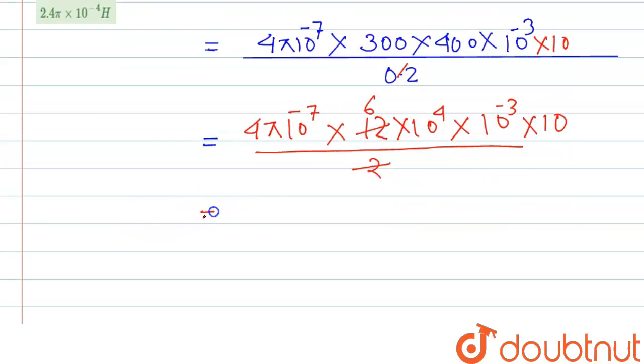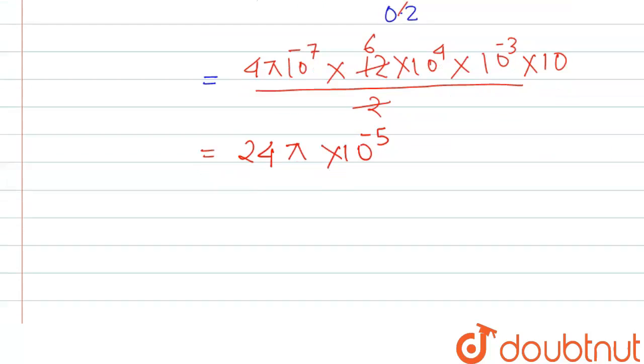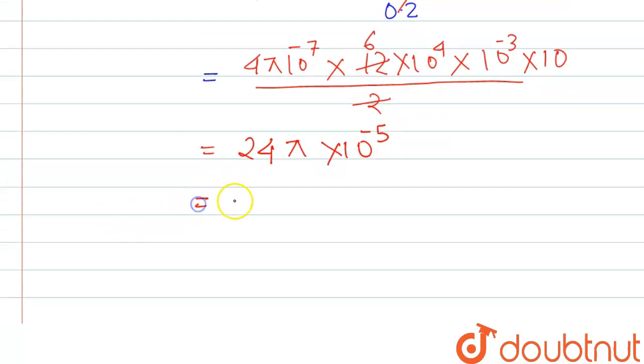So if we solve this, this will be 24 pi, 24 pi into 10 to the power minus 5. So further we can write this 2.4 pi into 10 to the power minus 4 henry.